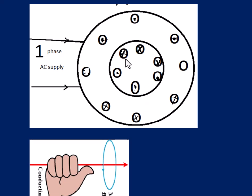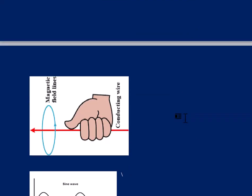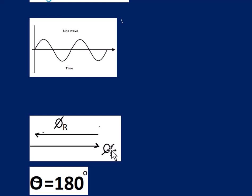Similarly, the same rule can be applied to the rotor: the top conductors carry the current into the paper whereas the bottom conductors carry the current out of the paper. Using the right hand thumb rule, the direction of the rotor magnetic field is from right to left. Shown vectorially, the stator flux and rotor flux have 180 degrees phase difference between them, so the net flux acting on the rotor is zero, and the rotor will not move — it is at standstill condition.